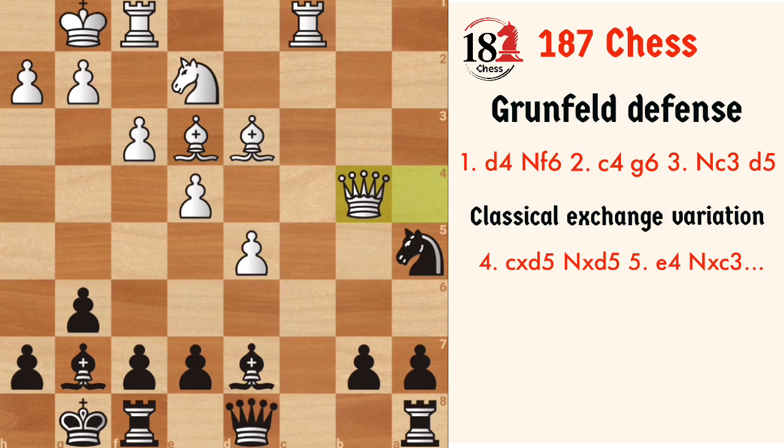You can realize that black's pieces are stuck now. The queen cannot move, the knight is stuck defending the b7 square, the light-square bishop doesn't have any good squares, and the dark-square bishop is excellently placed on the diagonal, but the rooks are not connected. Now you have to remember this key move for black, which is to play e6.